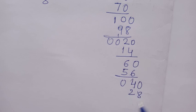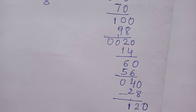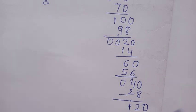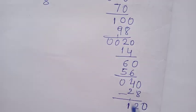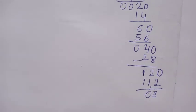60 minus 56 is 4. Take one more 0, it becomes 40. 14 times 2 is 28. 40 minus 28 is 12 - not 0, it's 12. Once again, we're taking... 120 divided by 14... 14 times 8 is 112.